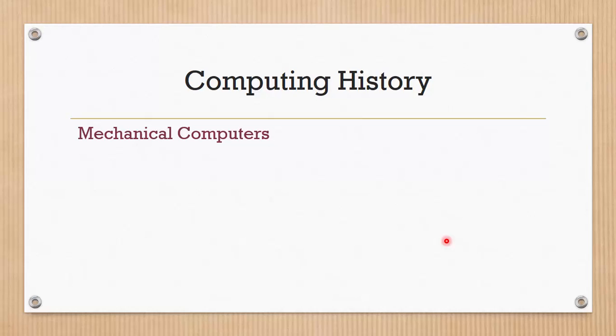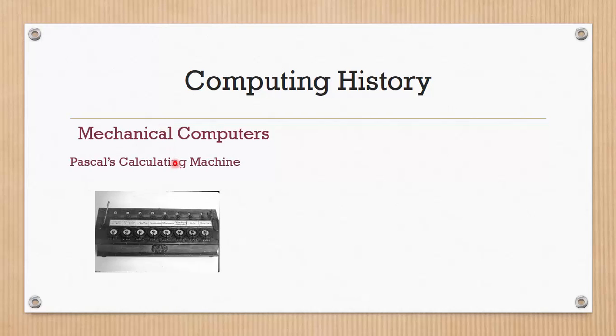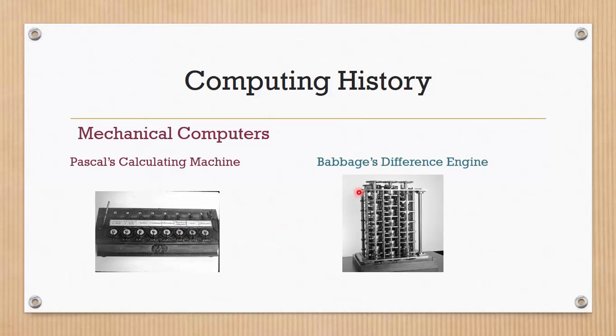And computing also involves algorithm. But early computers use mechanical system to perform algorithms instead of electronic signals. For example, Pascal computing machine use some kind of rotation to perform computing. And Babbage difference engine also use some kind of rotation on rod to perform computation.